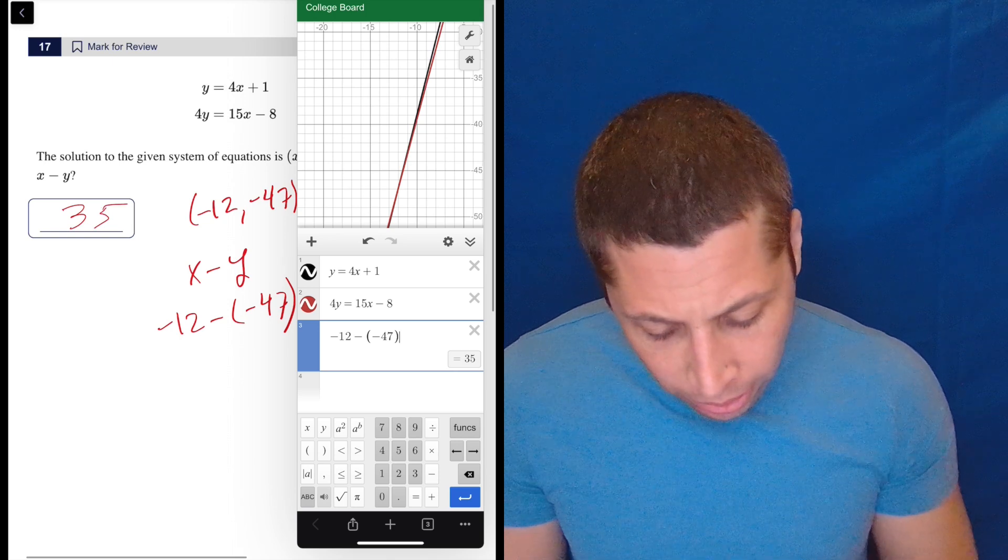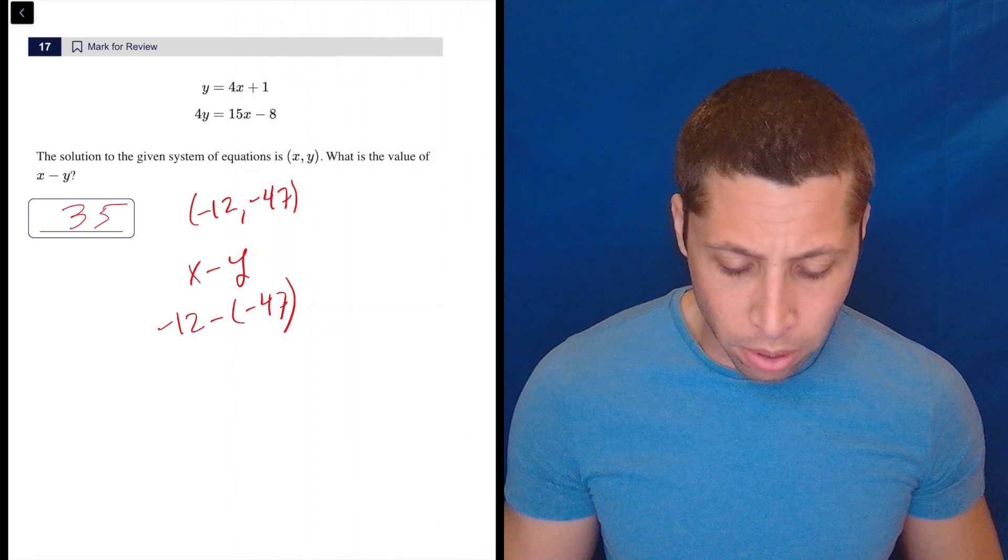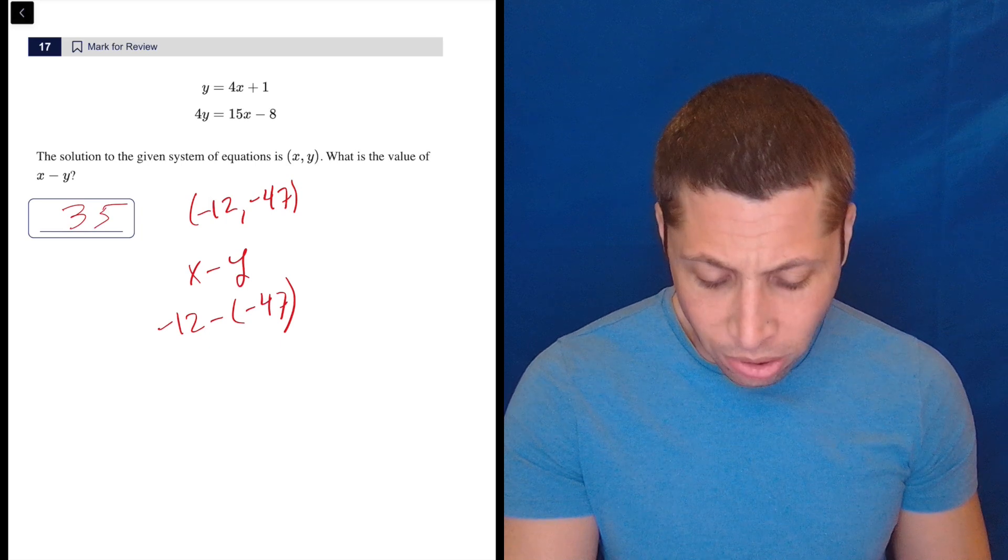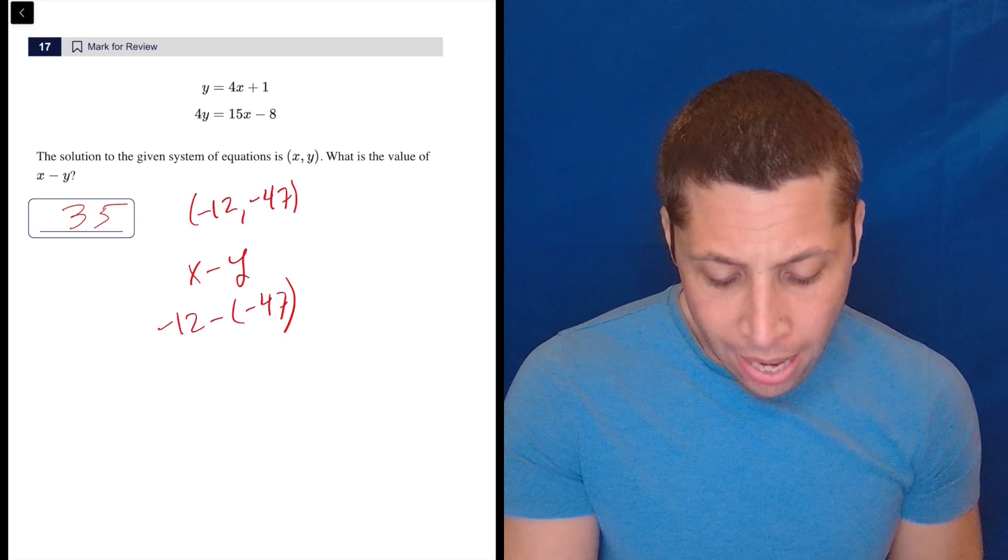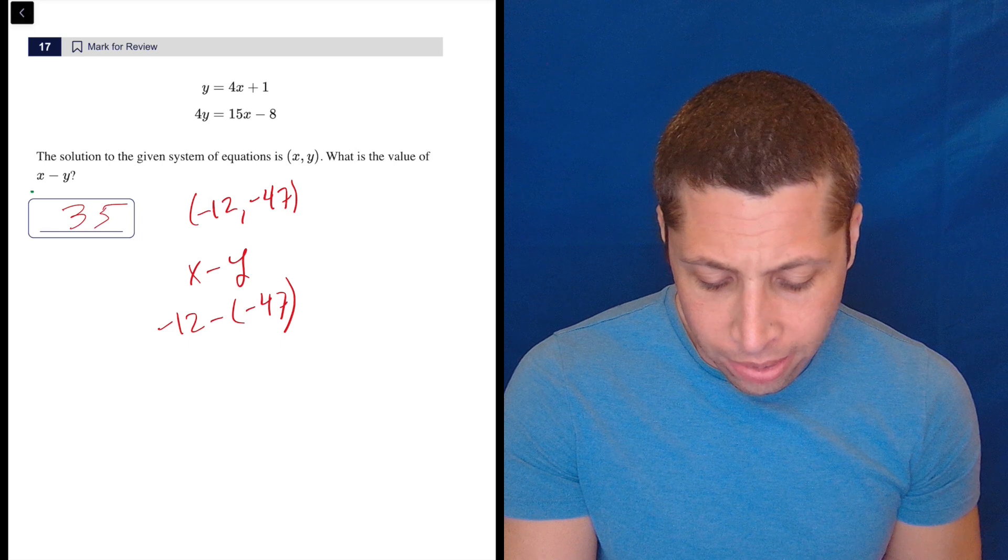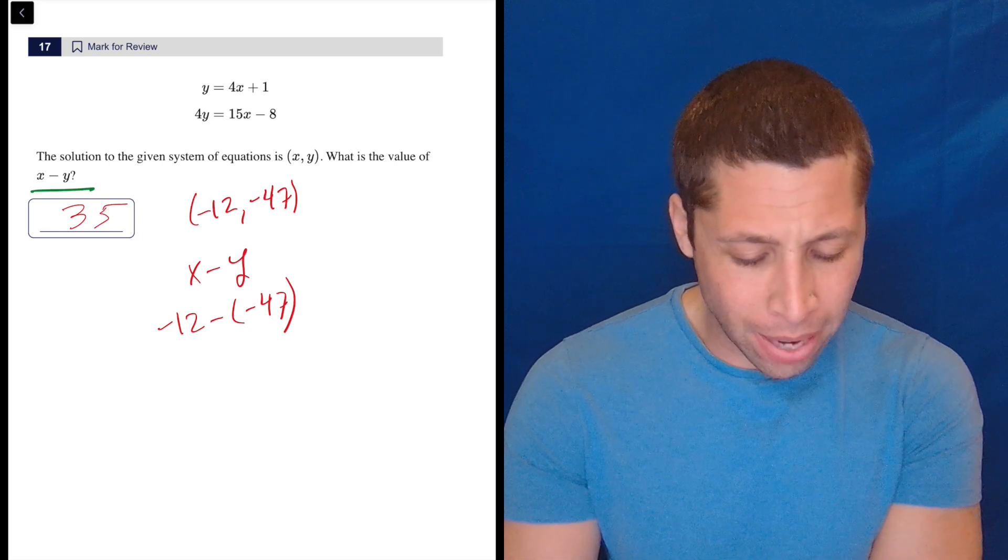So looking at this one, I'm always trying to think, is there some sort of shortcut that would have made it easier? I don't see a quick one because basically what I'd be looking for is, can I do something with this set of equations where I very quickly end up with X minus Y?